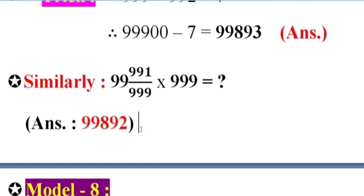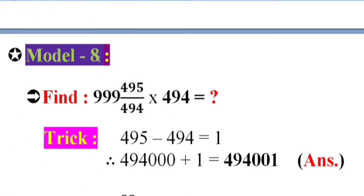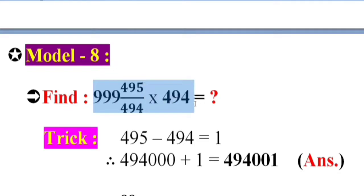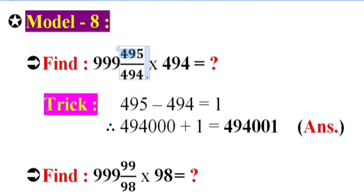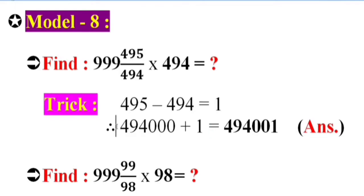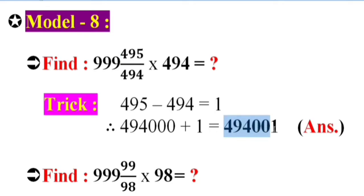Model 8. Find triple 9 and 495 by 4994 into 4994 equal what? Trick: 4995 minus 4994 equals 1. Therefore, 4994 triple zero plus 1, meaning 4994 triple zero that is triple 9. Answer: 4994 double zero 1.